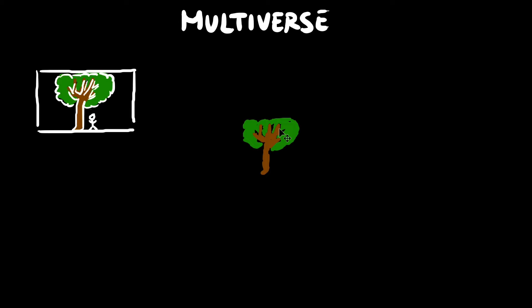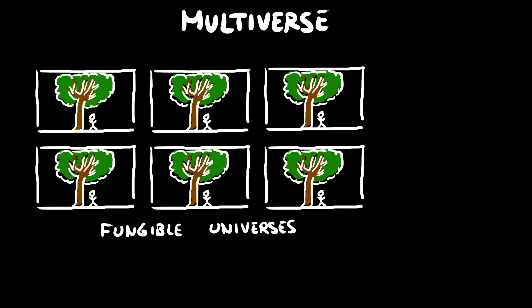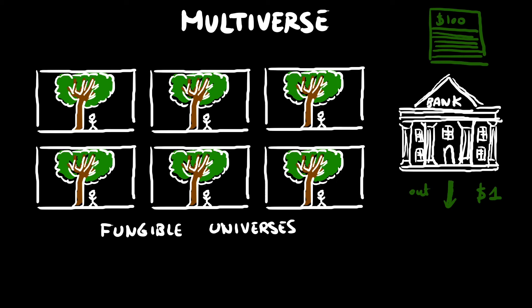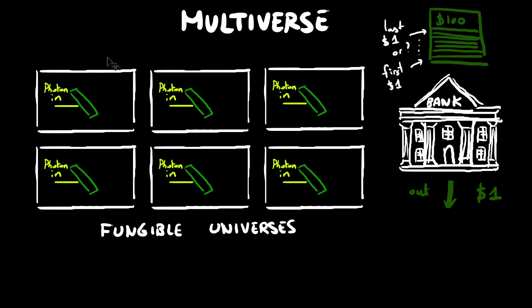A good example of fungibility is money. When you take a dollar from your bank account, you do not know, and actually do not care to know, whether it's the first dollar you deposited in your bank account, the last dollar, or any combination in between. So let's come back to the photon striking the semi-silvered mirror. Before the photon strikes the semi-silvered mirror, the universe you're in among the collection of fungible universes is similar to that dollar you're taking out of your bank account. It could be any one of them.